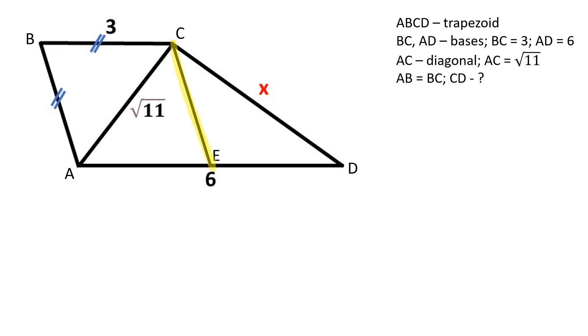Let's draw the segment CE which is parallel to AB. ABCE is a rhombus. All the sides are equal to 3.